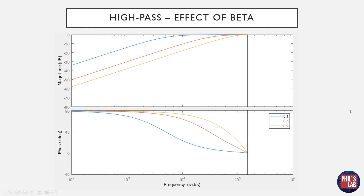We can look at the effect of the beta coefficient — just one coefficient changes the characteristics of this filter. When beta is 0.1 (the blue trace), we get less filtering — a lower cutoff and less attenuation at the DC end of the frequency spectrum. As we increase beta, for example to 0.5 (the orange trace) and then to 0.9 (the yellow trace), we get far more attenuation overall as well as a higher cutoff frequency — essentially the inverse of the alpha coefficient behavior.